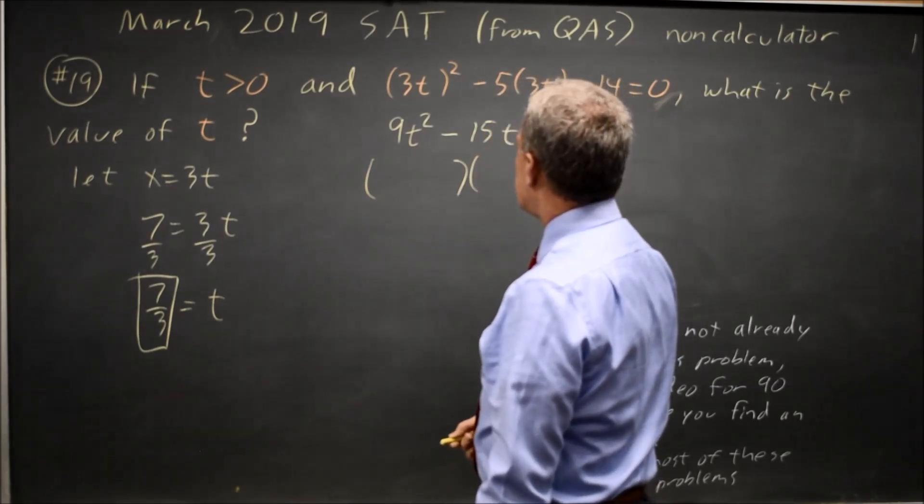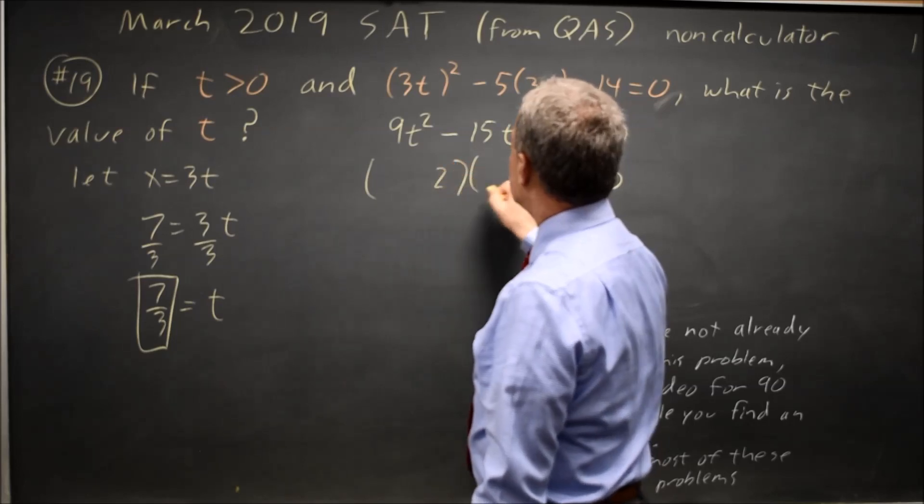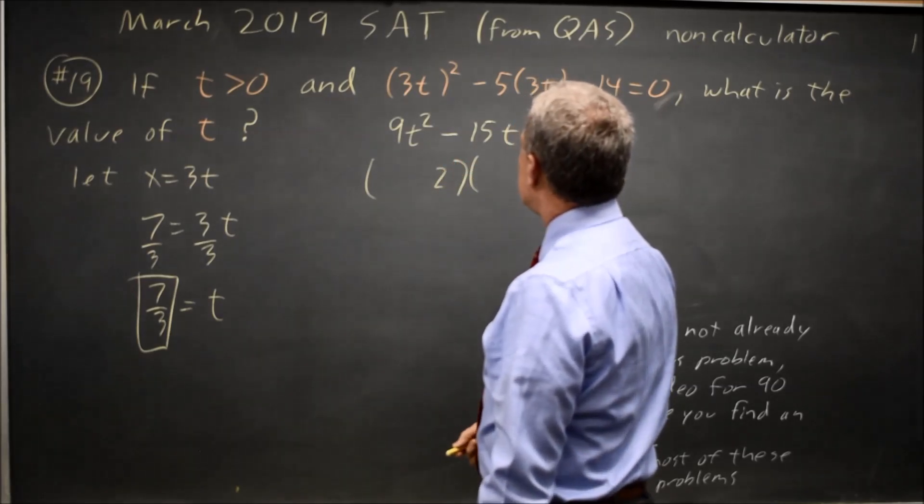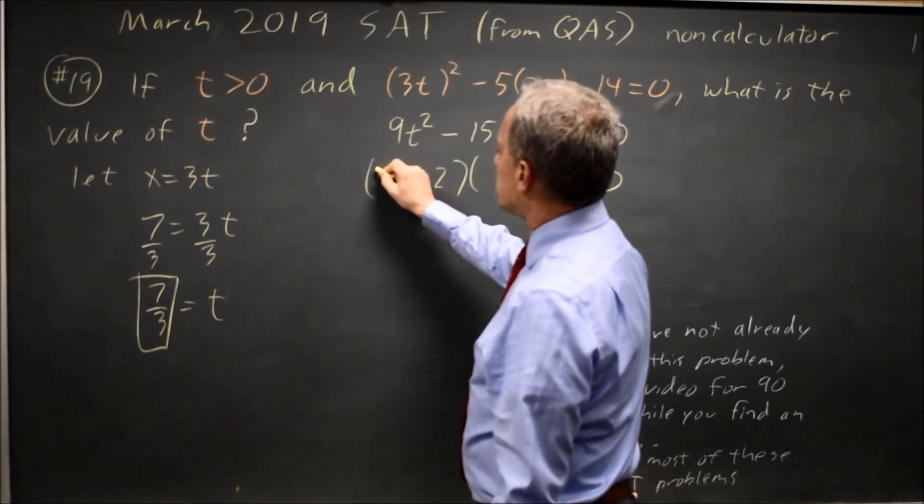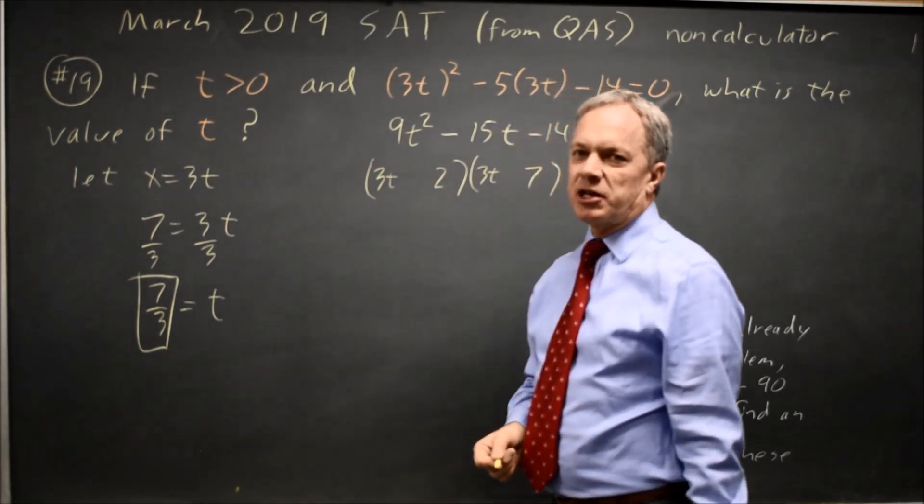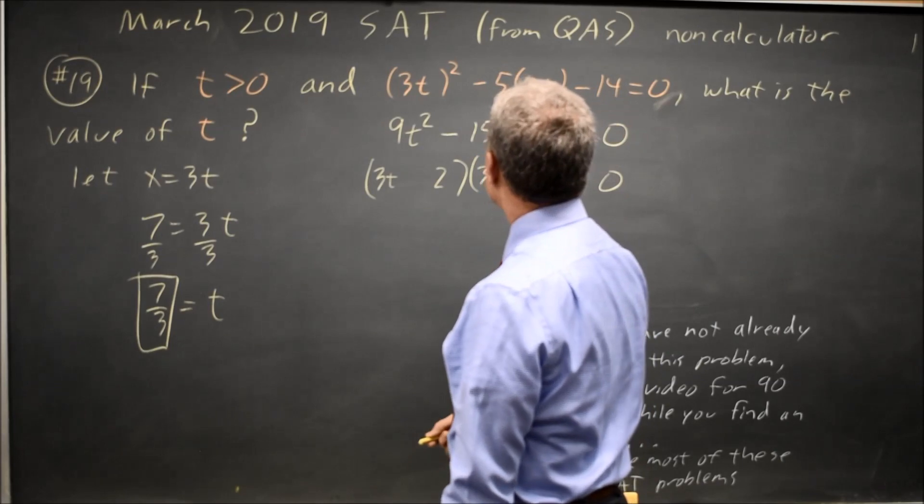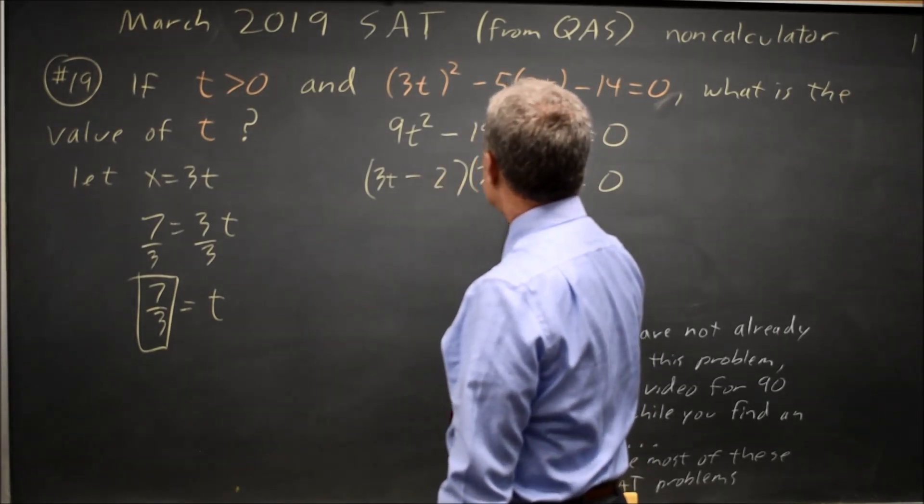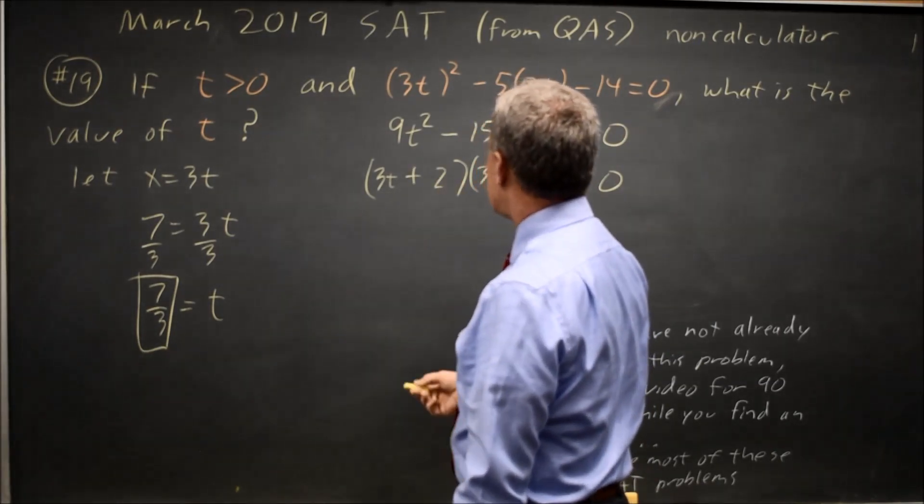Two numbers whose product is negative 14 would be 2 and 7. And I'm going to hope it starts with 3t and 3t. Since I already did the other method, I know that that is how it starts. And there's a plus and a minus, and the minus is the more negative number, so the 2 is the plus.